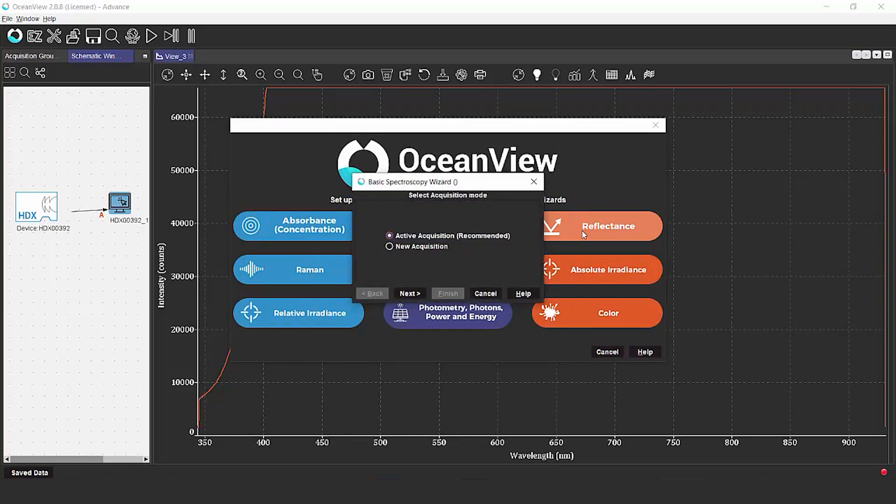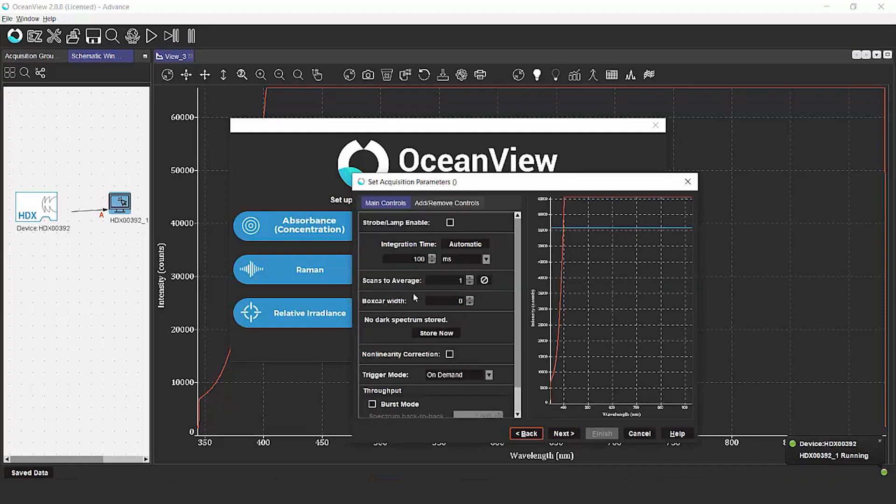So we're going to pick the reflectance option. We recommend sticking with the active acquisition, so no change is needed here, and you can just click next.